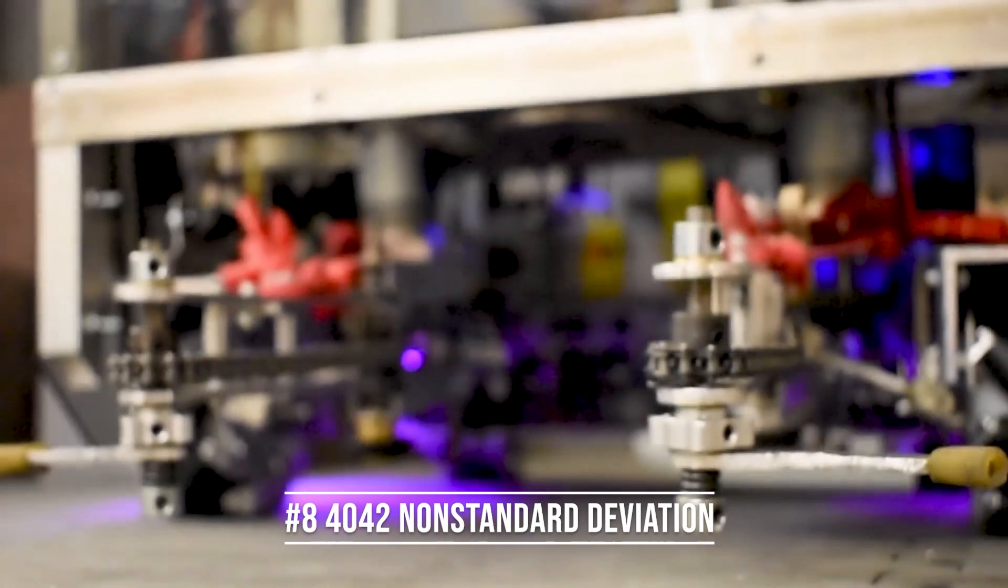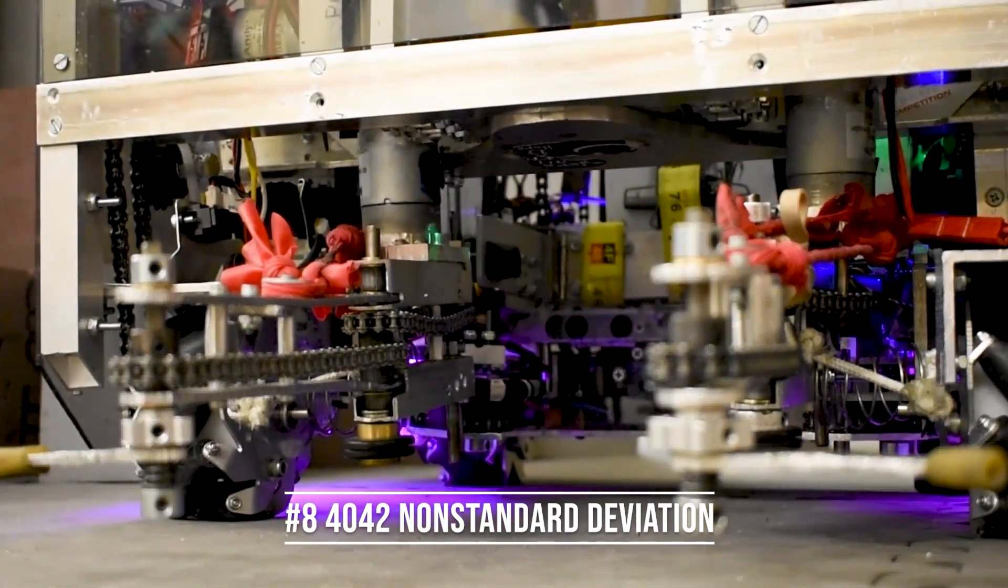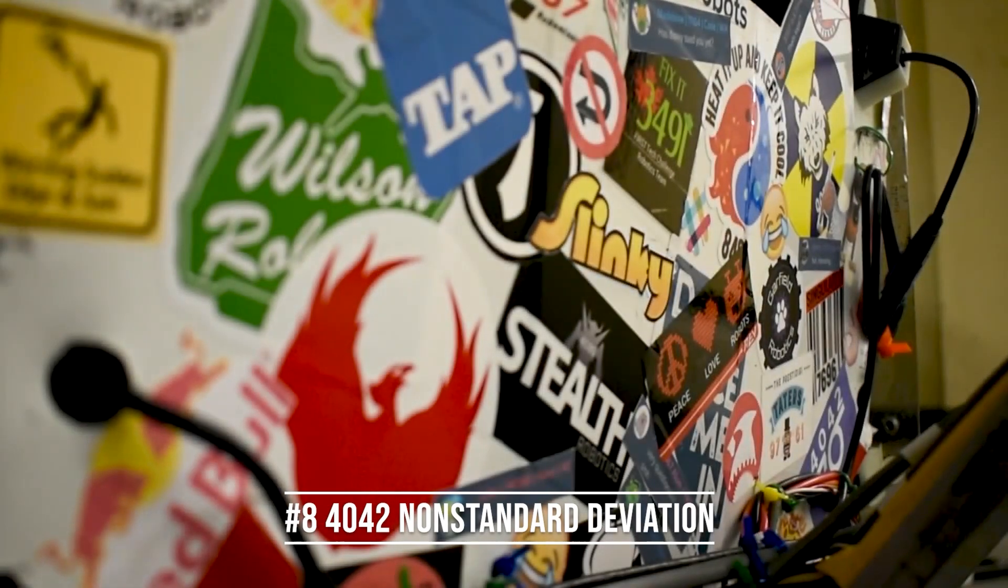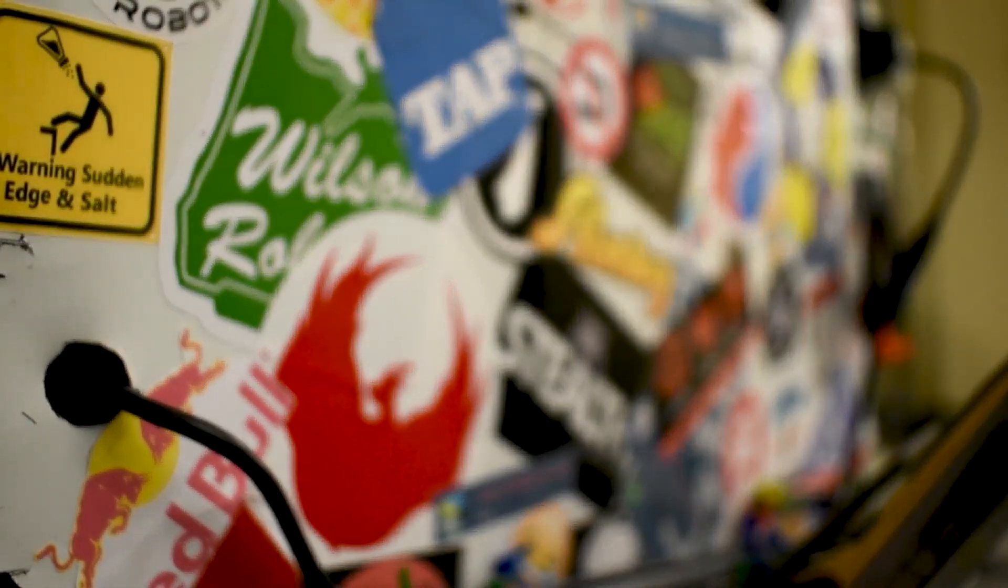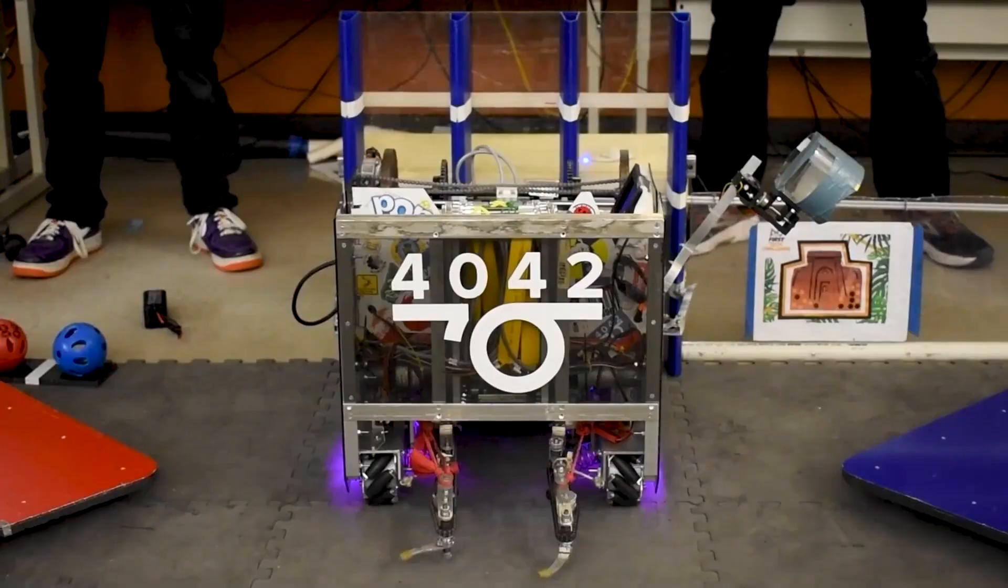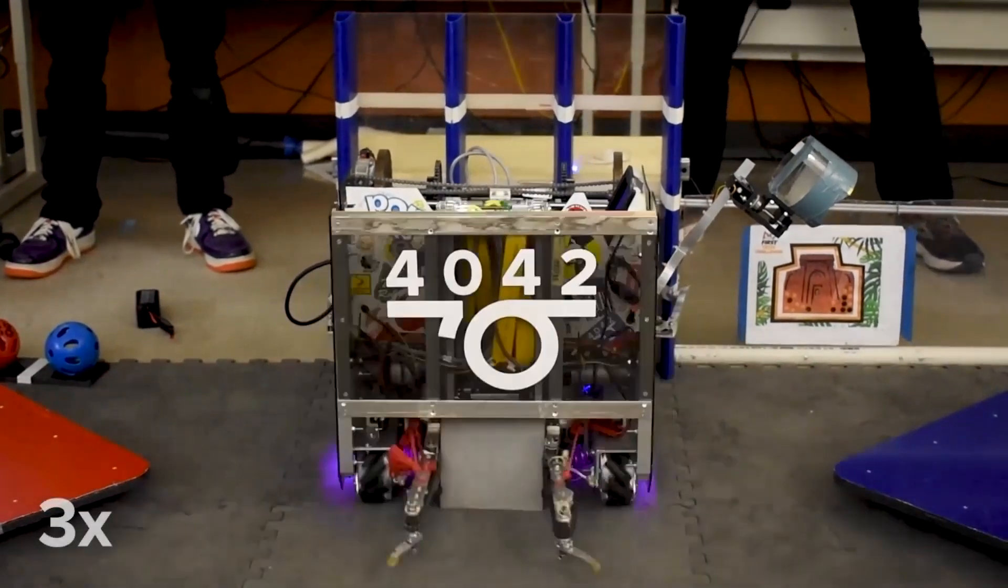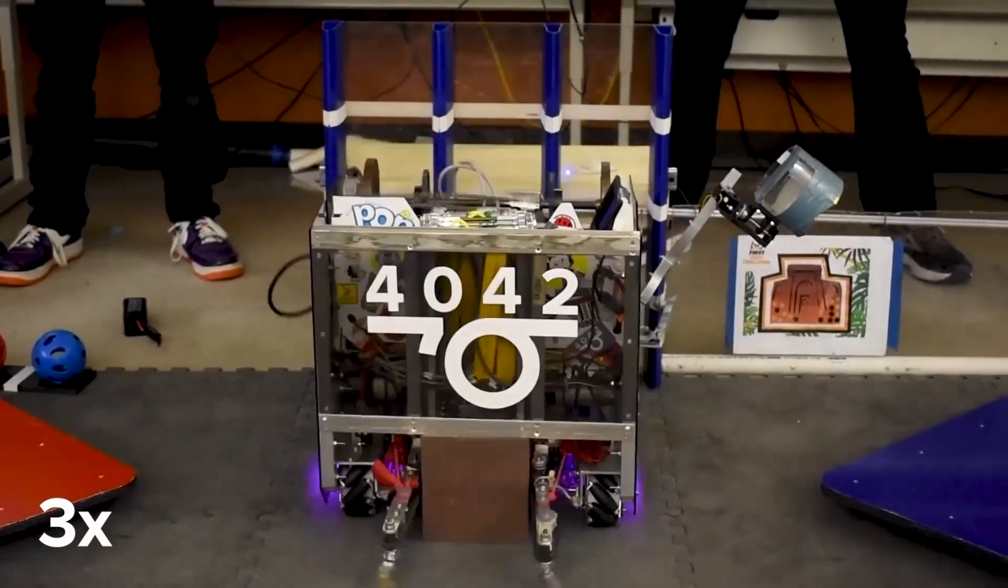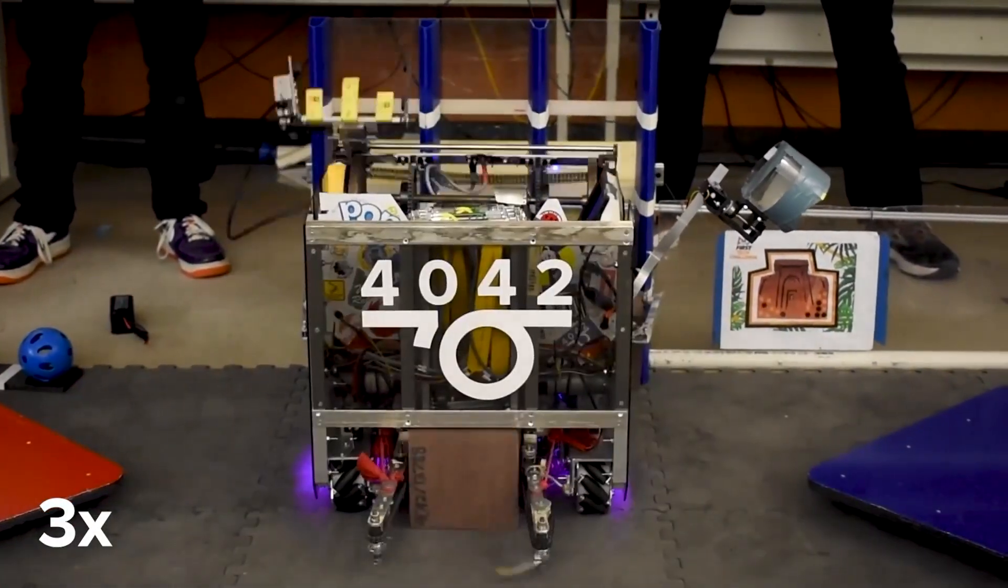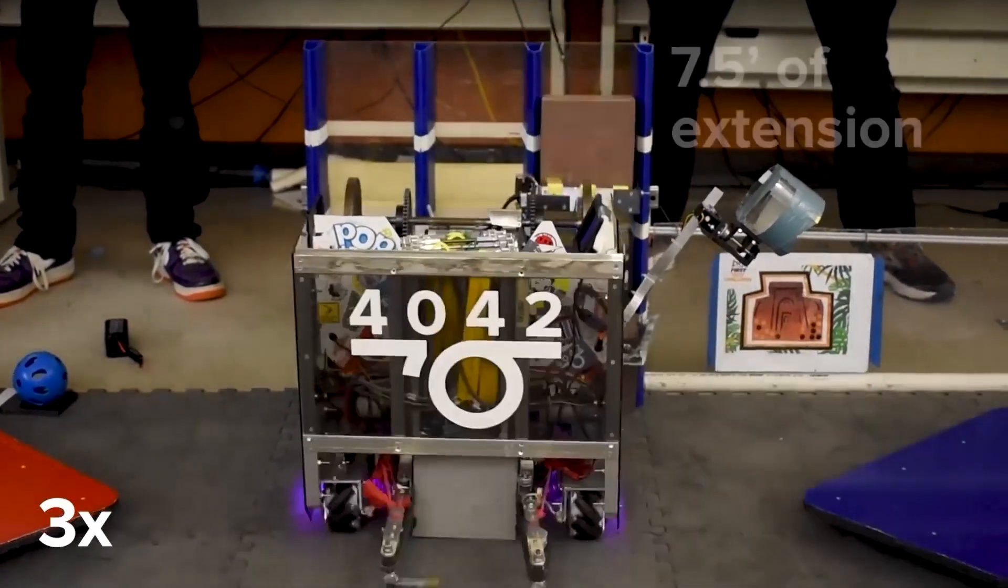Another reveal from Relic Recovery takes the 8th spot and this one was made by team 4042, non-standard deviation. Like most reveal it starts out with a teaser montage and they do an amazing job with smoothly adjusting the focus throughout the montage. When they show their robot building a cipher the music is synced so perfectly it could almost be like the robot is creating the machine sounds and the music. This has to be one of the best reveals ever for one of the coolest robots ever.